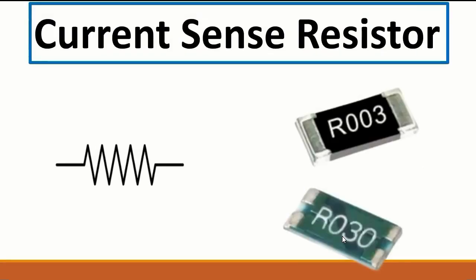Then we have the current sense resistor, a very important component found in every computer motherboard. Its purpose is to control the current in the circuit. If you check it with a multimeter you will get a very low resistance — and a short in buzzer mode — but that does not mean the resistor has failed. It is designed to have very low resistance.